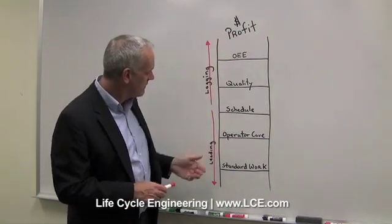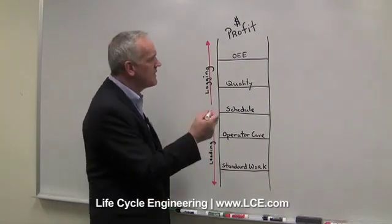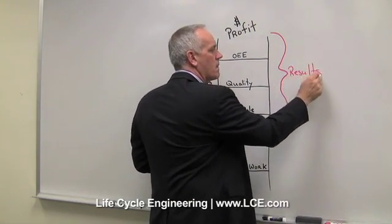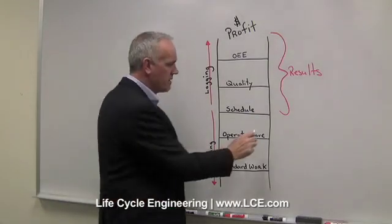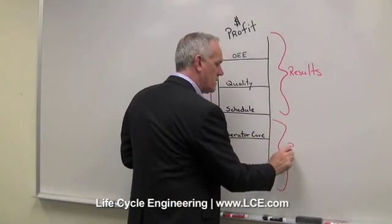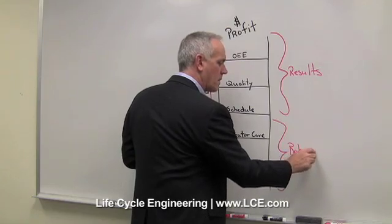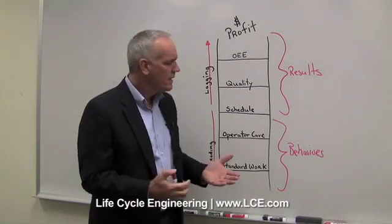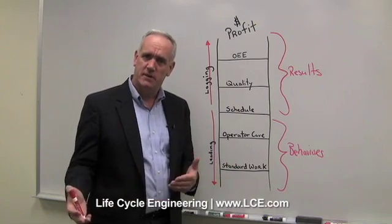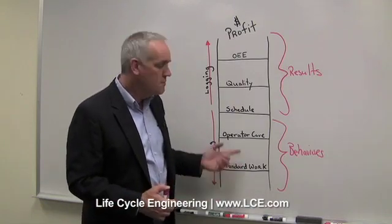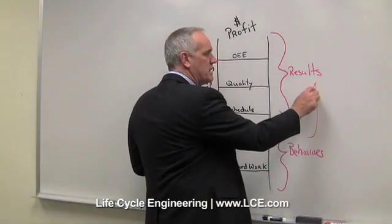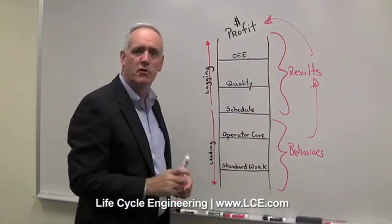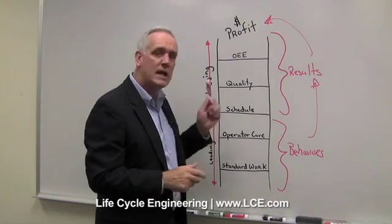Something you'll notice with this ladder of leading and lagging metrics is that the upper part of the ladder represents results, and the lower part of the ladder is behaviors. If you think about it, when we're doing major change, change means people are doing something differently — new behaviors. So if I can focus on the new behaviors, I can achieve better results. If I can get better results, I can get better performance and increase my profits. It's all about better performance.